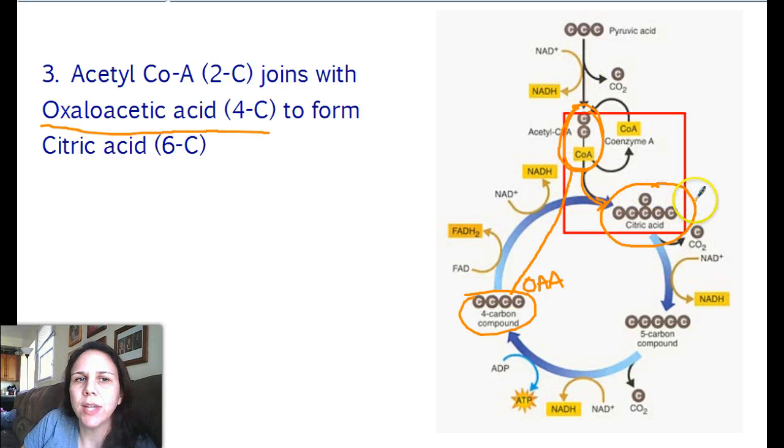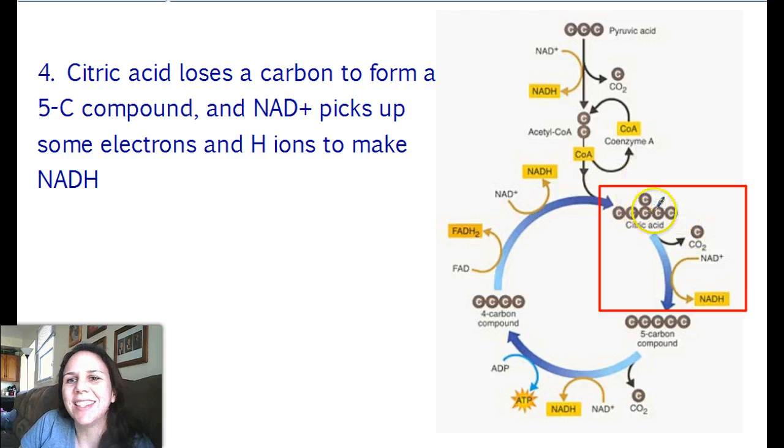So these two guys are going to hook up and they're going to become citric acid. Citric acid is a six carbon molecule, which you can see by counting them. Citric acid is also the things that make gummy bears sour, or you know, sour gummy bears sour. The citric acid is going to randomly lose a carbon dioxide, so one carbon is just going to say see ya, I'm out of here. And NAD is going to once again come along, swoop by, and pick up some electrons and hydrogens to make NADH and some H+.